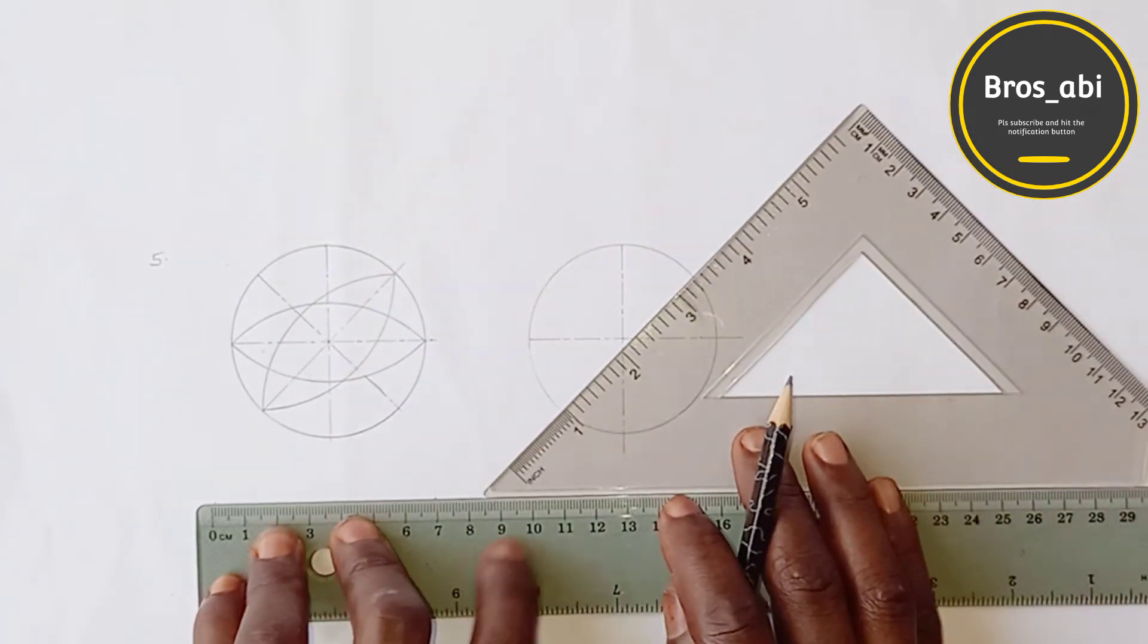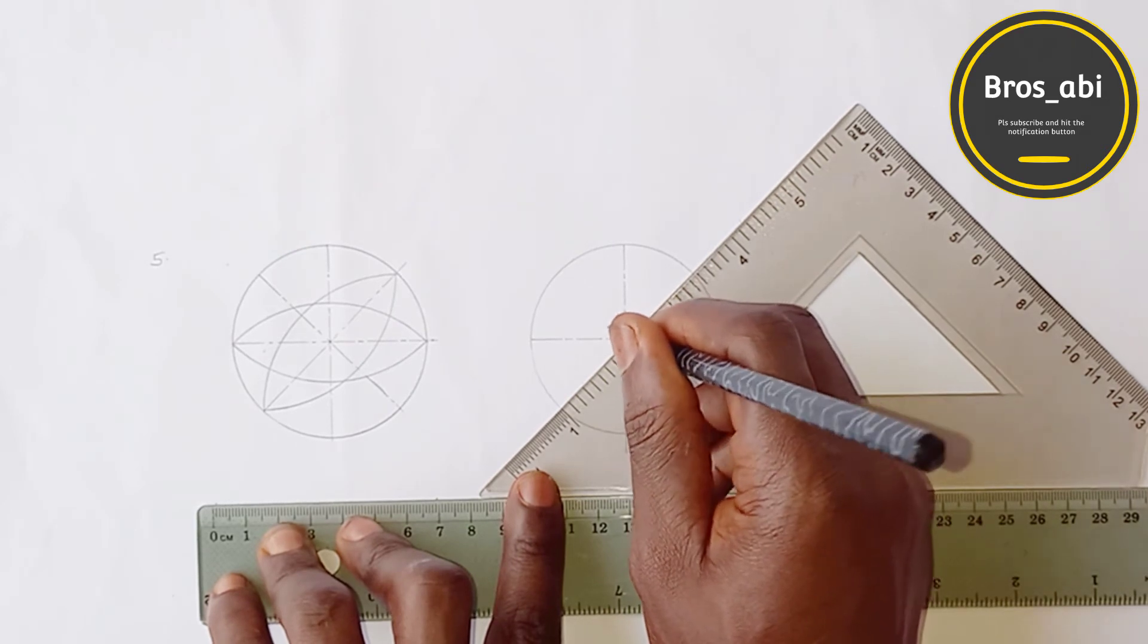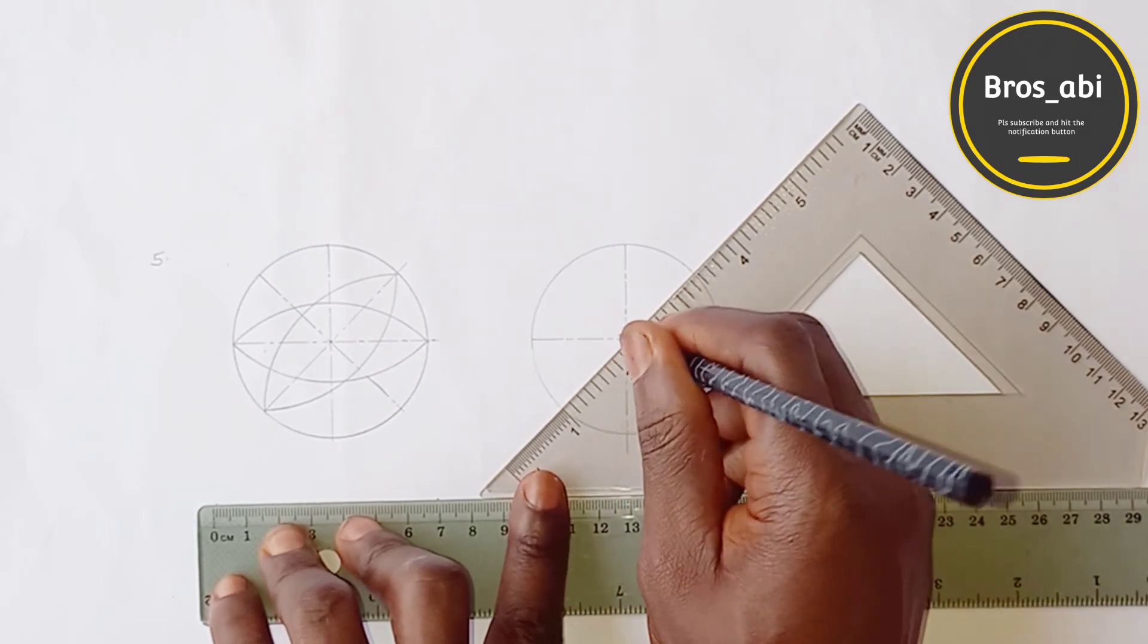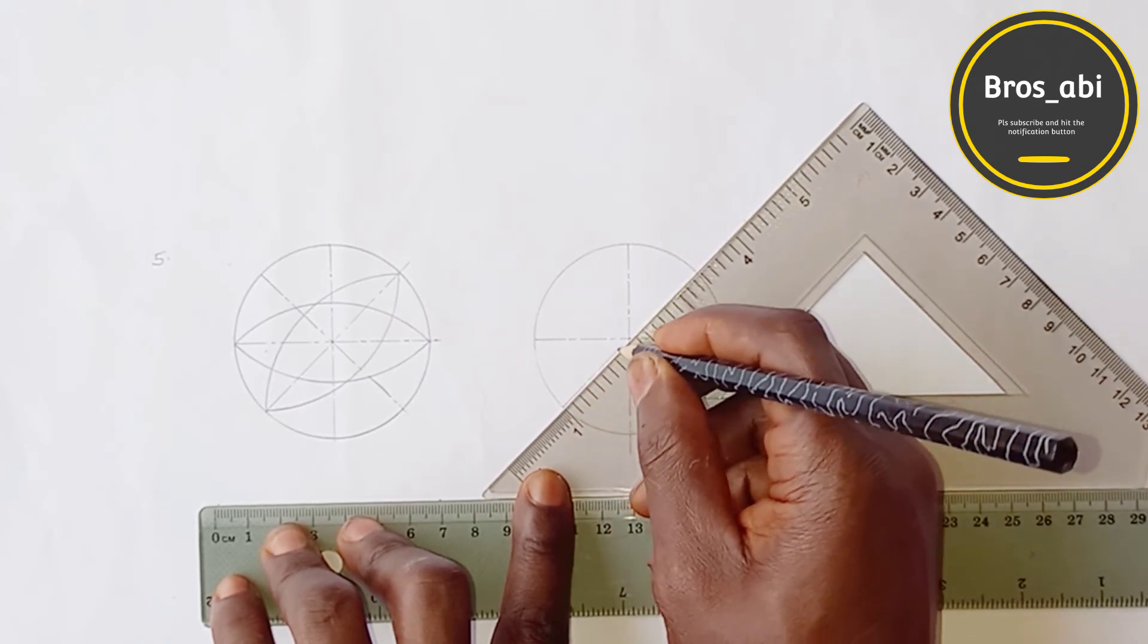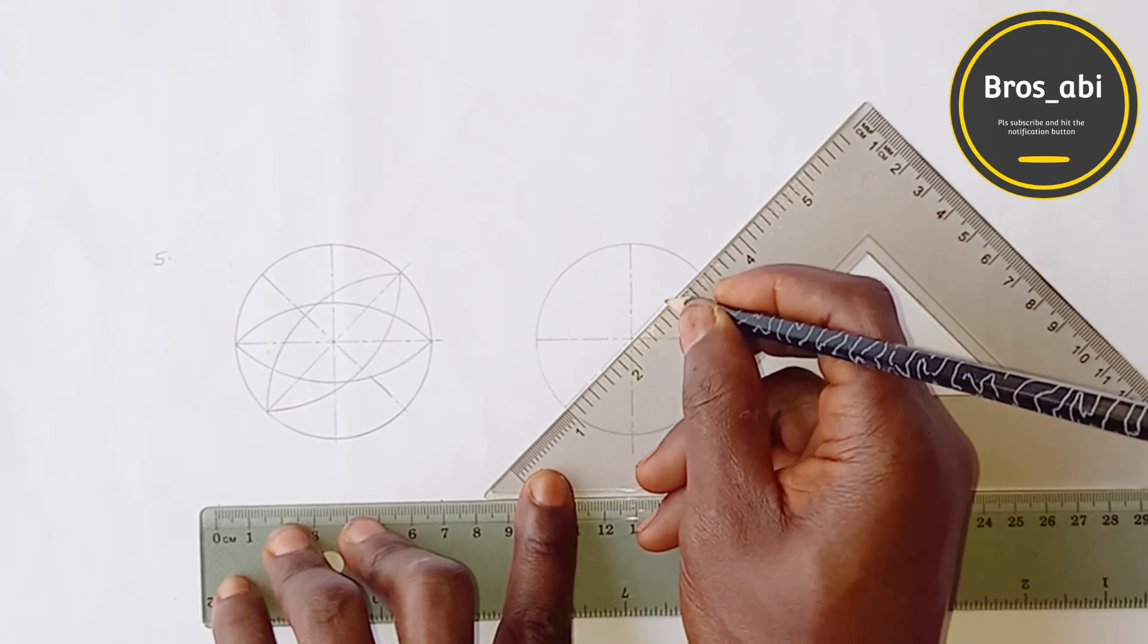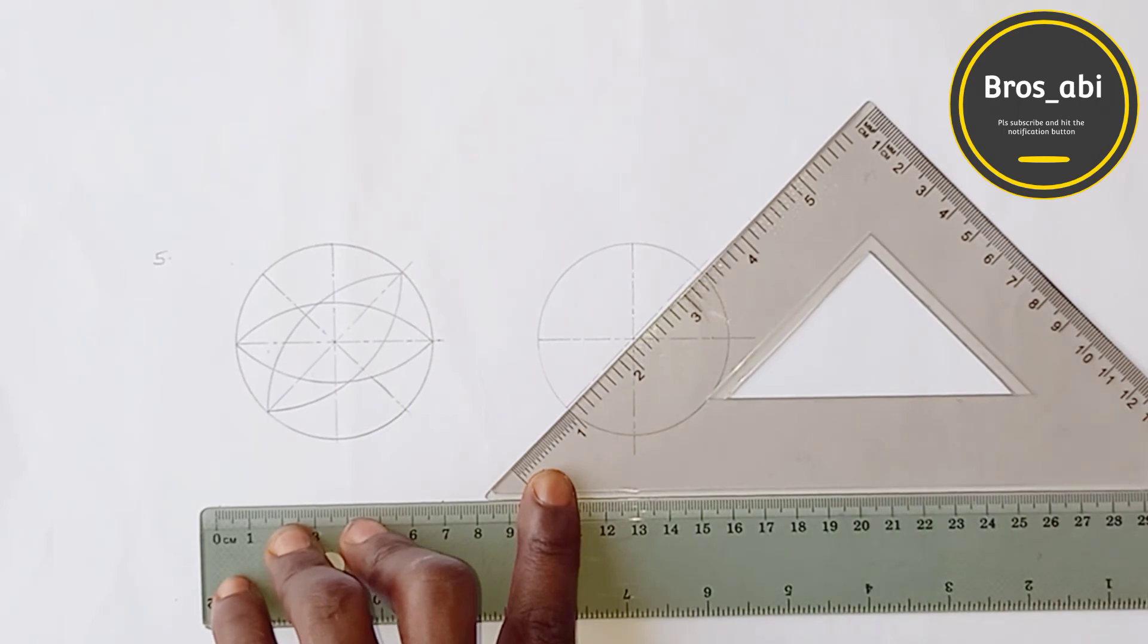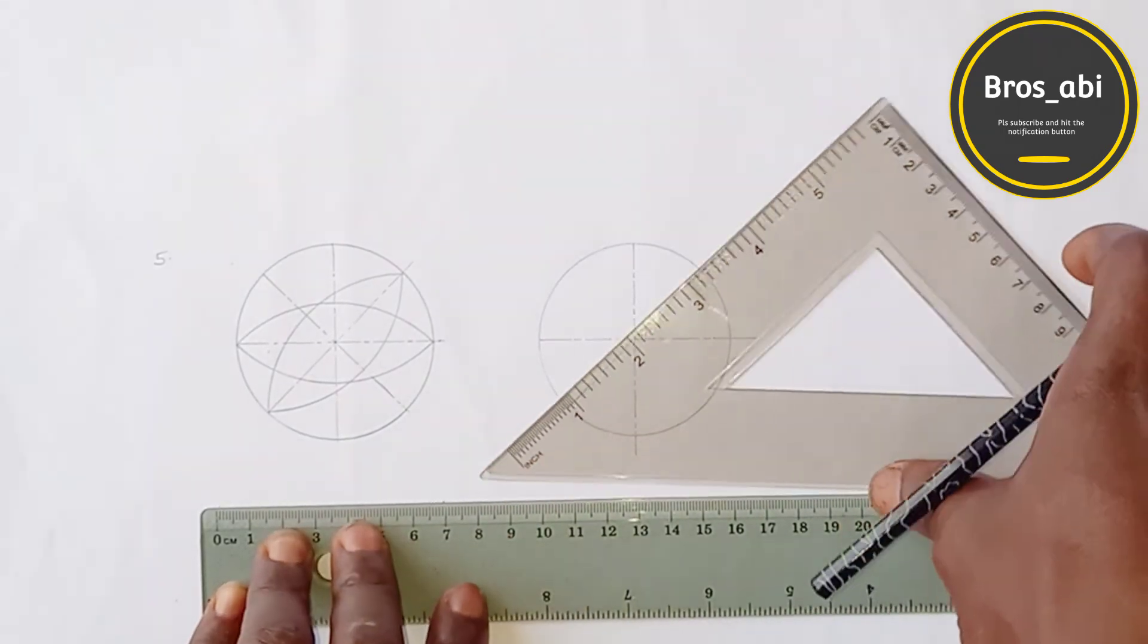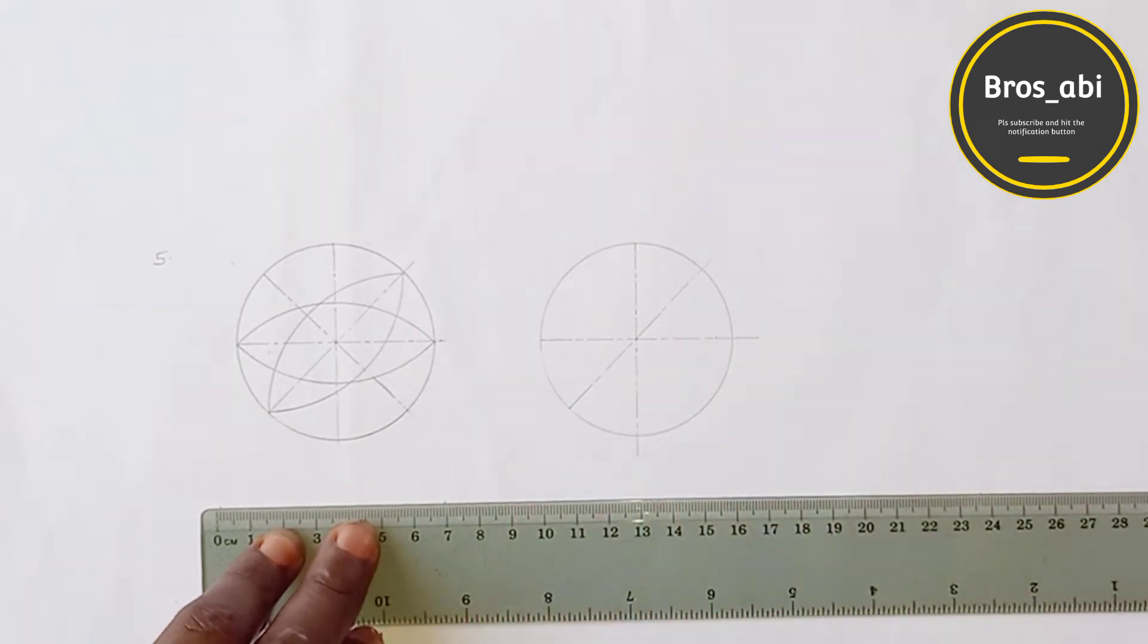All right. This is it. It's a center line passing through the center. So it's still going to be chain line. That's long dash plus short dash. This is it.